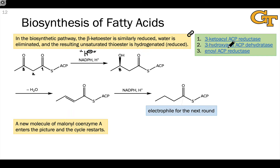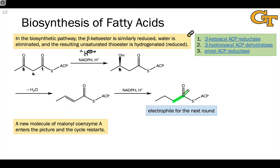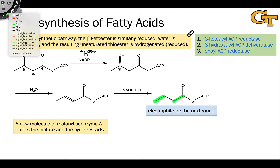The next enzyme, 3-hydroxyacyl-ACP dehydratase, dehydrates this intermediate — in other words, eliminates water from it to form an alkene. And finally, the third enzyme, enoyl-ACP reductase, reduces the alkene to an alkane through the use, again, of NADPH and H+.